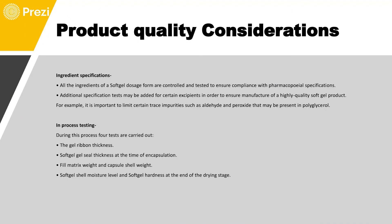All ingredients of the soft gelatin dosage form are controlled and tested to ensure compliance with pharmacopoeia specifications. Additional specification tests are required for certain excipients to ensure high quality. For example, it is important to limit trace quantities of impurities such as aldehydes and peroxides that may be present in polyglycerol. In-process tests conducted include: gel ribbon thickness, soft gel seal thickness, encapsulation completeness, fill matrix weight, capsule shell weight, soft gelatin shell moisture level, and soft gel hardness at the end of the drying stage.